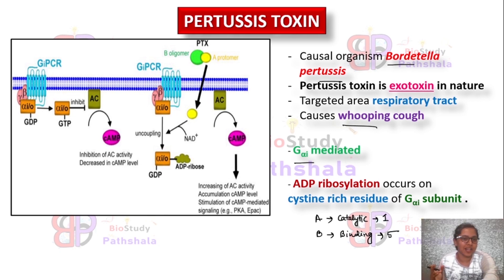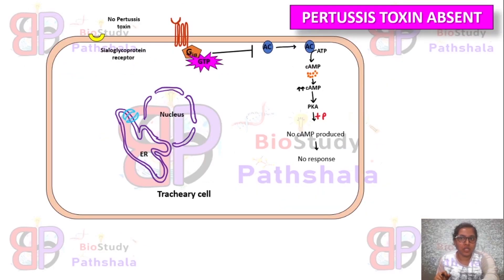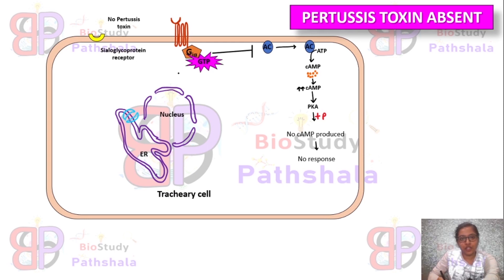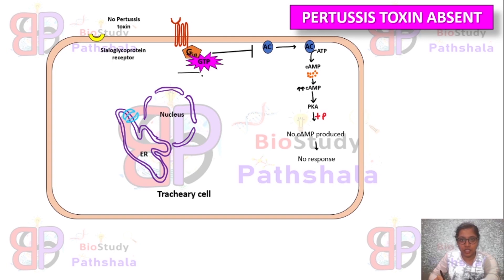Now we will see the effects when the Pertussis toxin is present as well as when it is absent. When Pertussis toxin is absent, the Gi alpha shows its effect when it is in the GTP-bound state, that means the guanine triphosphate bound state.